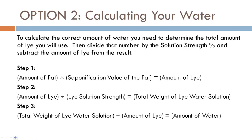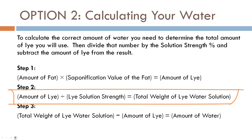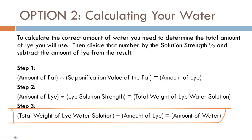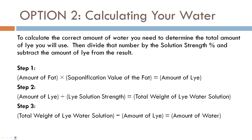Let's move on to option two. Step one is determining your lye, which we've already done. Steps two and three determine your water. In step two, take the amount of lye and divide that by the solution strength — that gives you the total weight of your lye-water solution combined. Then in step three, take that total weight and subtract the lye, and that gives you your water amount. It's two steps, but many people find this approach easier to remember.